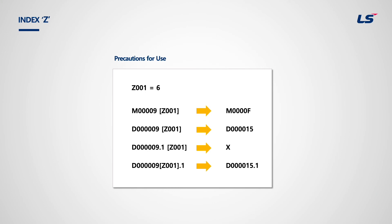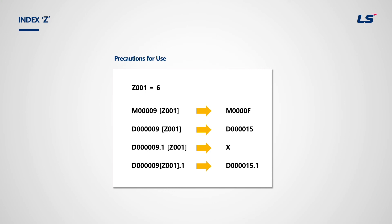For M, Z-index is added as bit, but for D, Z-index is added as word. As explained, the last digit for bit address is expressed in hexadecimal. This is why when Z1 is 6, D9Z1 becomes word D15. However, when index is used with word-based memory used as a bit, it should be expressed as D9Z1.1, not D9.1 Z1. Z-index is used very frequently because it effectively simplifies the ladder program.